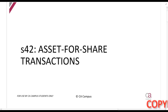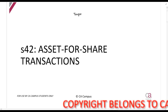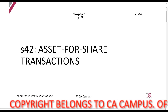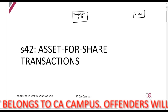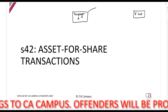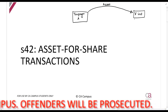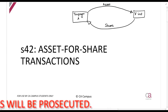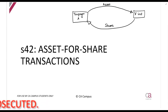We are now looking at Section 42, the asset for share transaction — the corporate rules section. In simple terms, we have a taxpayer, let's call it Taxpayer A, and a company called X Limited. This section talks about an asset for share transaction: Taxpayer A will give an asset to the company, and in return the company will give Taxpayer A shares, so Taxpayer A becomes a shareholder of X Limited — paying for shares by giving an asset.